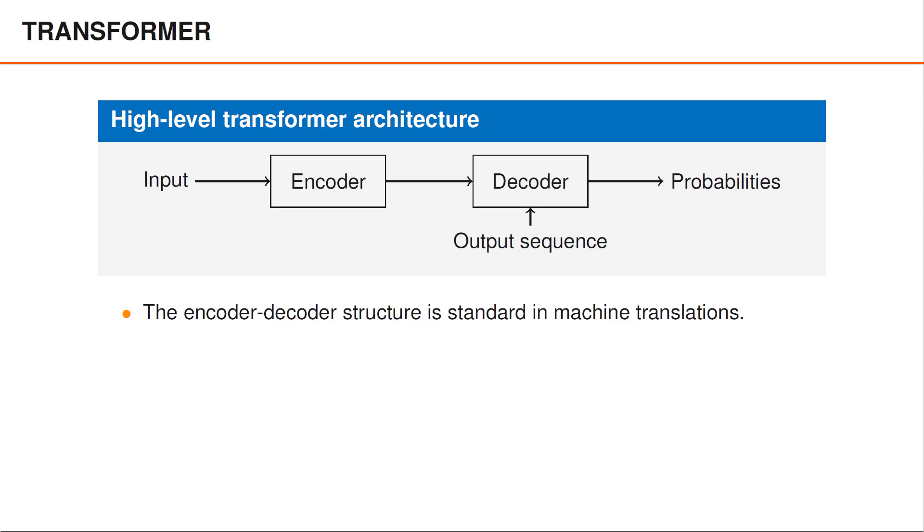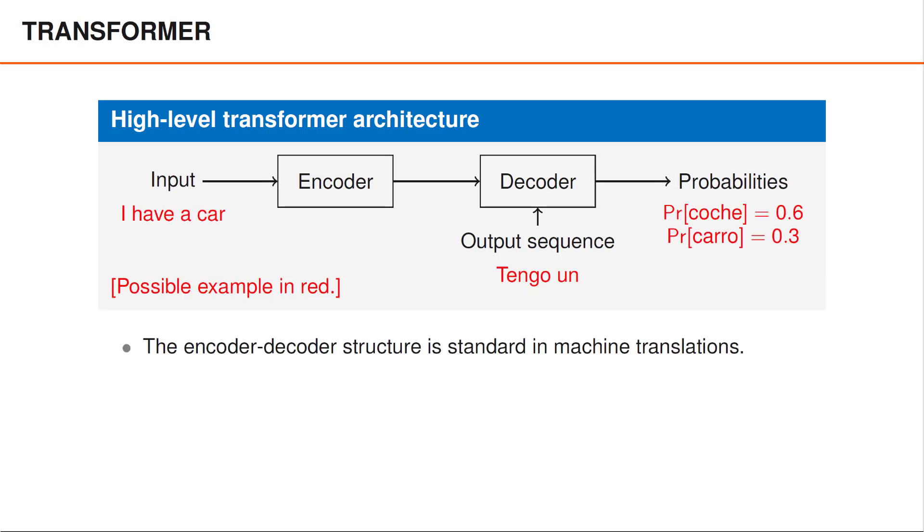and generally referred to as a sequence-to-sequence model in the RNN literature. When we use a transformer for translation, we provide a sequence to the encoder, for instance, I have a car.